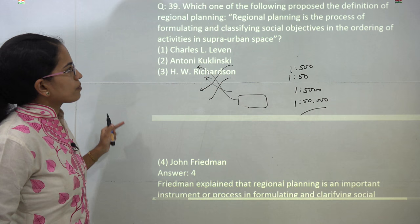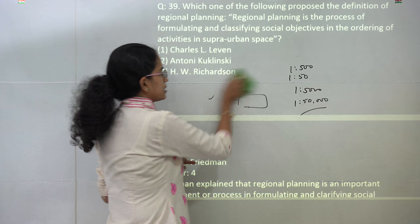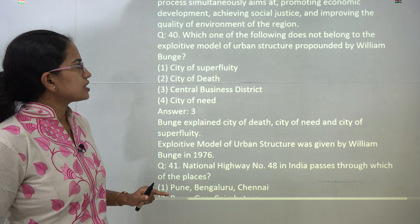The next question is: 'Regional planning is the process of formulating and classifying social objectives in the ordering of activities in supra-urban space.' This is a very important question. The concept of supra-urban space was given by Friedman, who did extensive work on supra-urban spaces. So the correct answer here is Friedman.